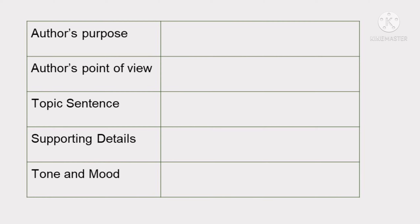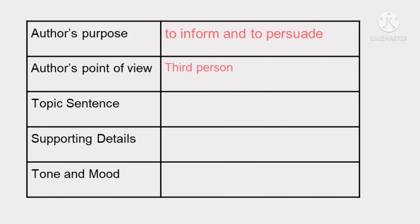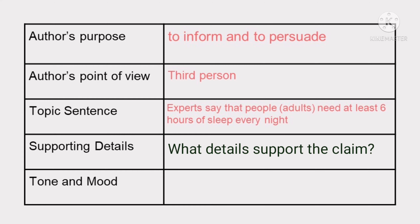Let us now check your answers. What is the author's purpose in writing the text? It is to give information to the readers as well as convince the readers to believe the author. What is the author's point of view? The passage was written from a third-person point of view. What is the topic sentence? Experts say that people need at least 6 hours of sleep every night.